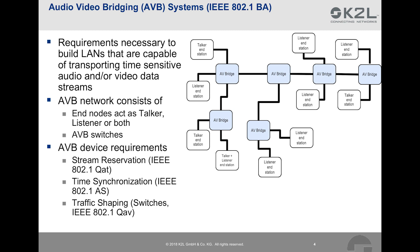On the right-hand side, we see a schematical depiction of an AVB network. An AVB network consists of end nodes that can act either as talker or listener or both. In other words, end nodes are sources or sinks for time-critical data streams in the network. The second kind of devices in the network are AVB switches that, besides offering the normal switching functionality, offer additional functionality that allows time-sensitive data to be transmitted in the network.